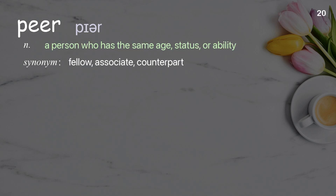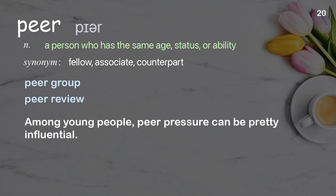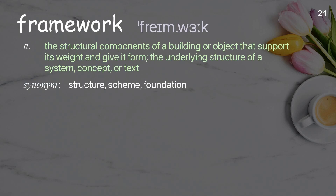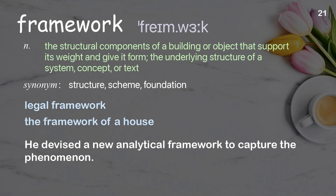Peer: A person who has the same age, status, or ability. Examples: Peer group. Peer review. Framework: The underlying structure of a system, concept, or text. Examples: Legal framework. The framework of a house. He devised a new analytical framework to capture the phenomenon.